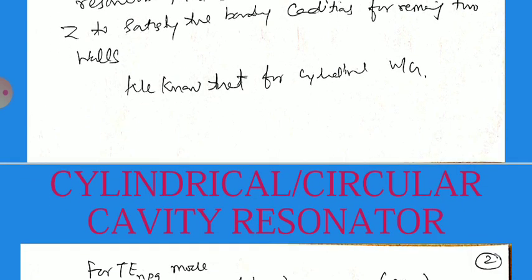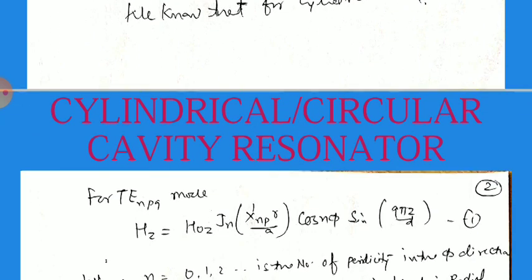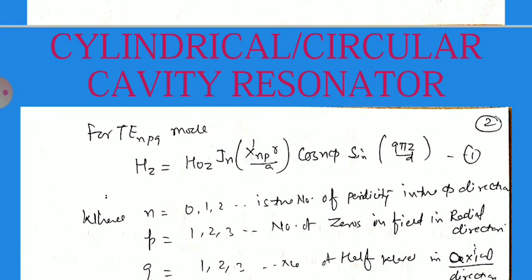We know that for the cylindrical waveguide, for the TE_npq mode, the component of the magnetic field along the Z axis is Hz equal to H0z times Jn of x'np times r/A times cos(n phi) times sin(q pi z/d), where n is the number 0, 1, 2, 3, 4, 5.